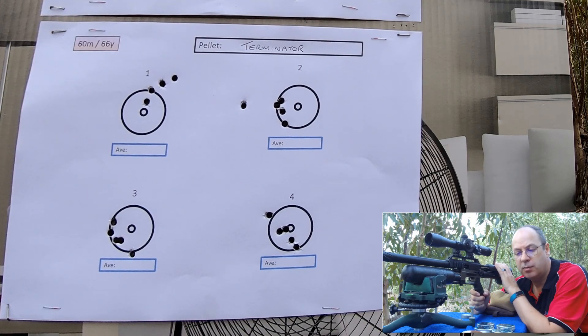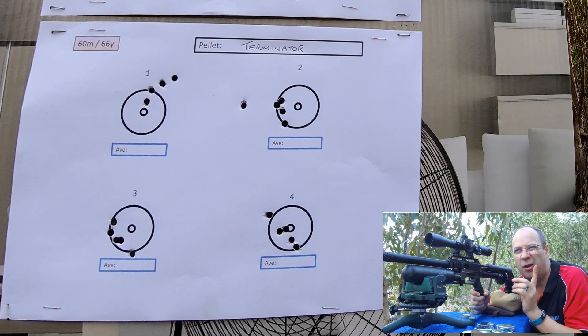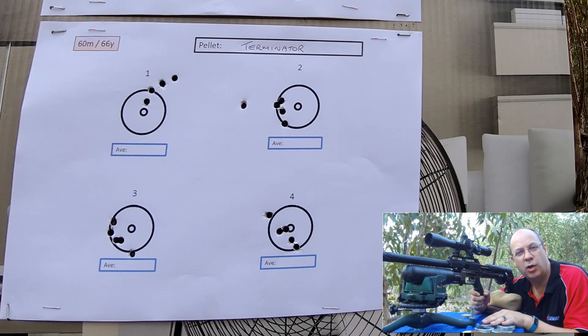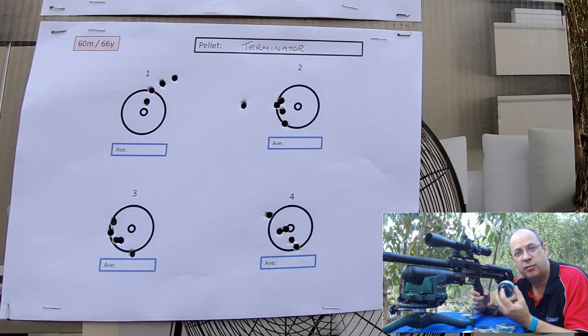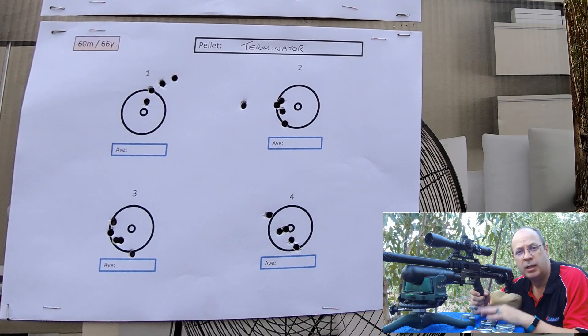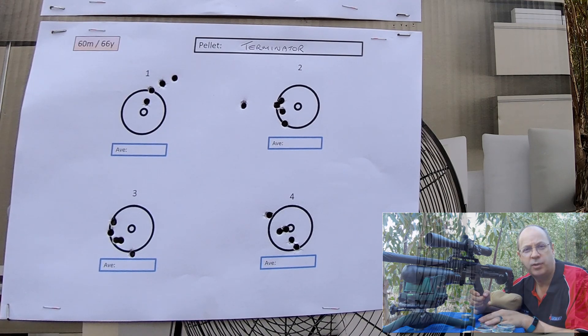I'm quite surprised by the Terminators. They kept their shape. I had one little flyer that I could see twirl in the air. The rest of them were actually quite good. So even for a pellet designed for shorter distances, I think it performed quite well at 60 meters. Time to go and measure up and give you guys the results.